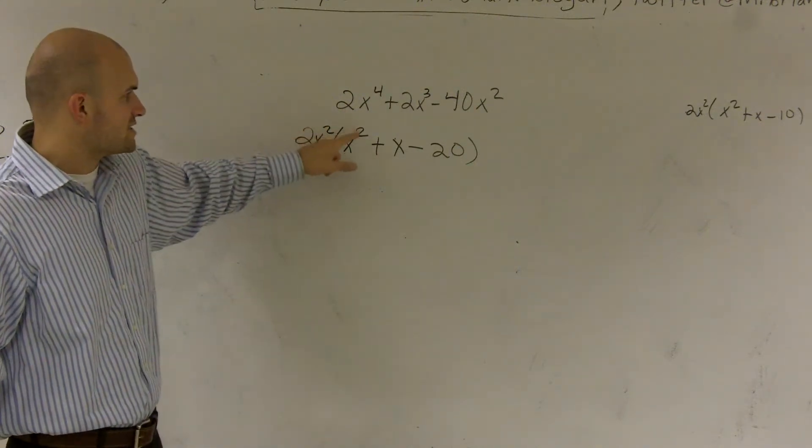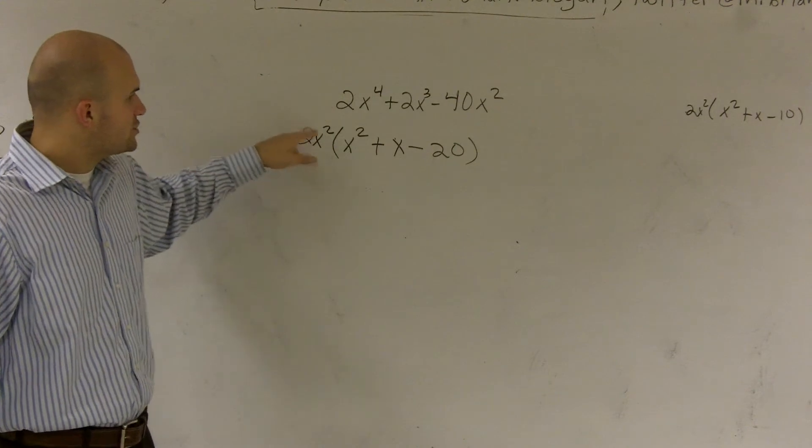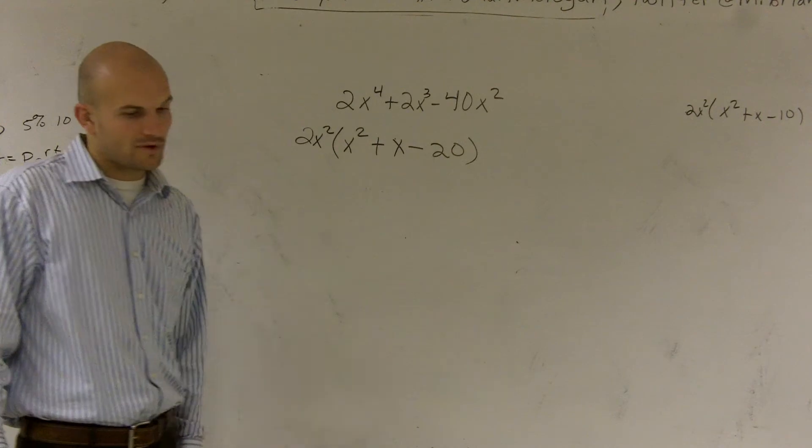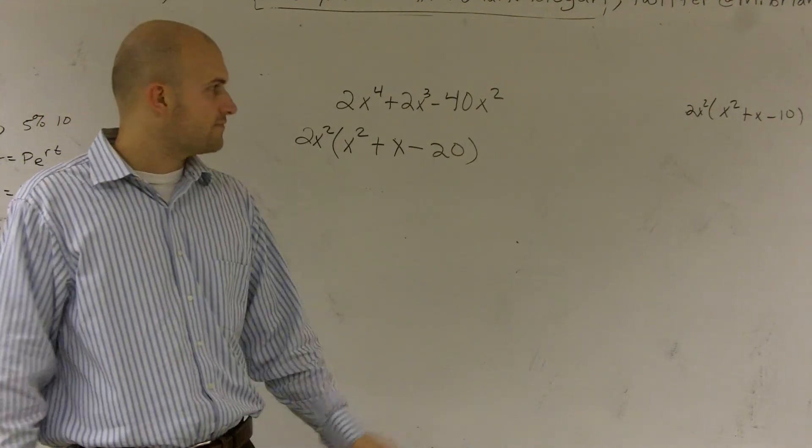2x squared times x squared is 2x to the fourth. 2x squared times x is 2x cubed. And 2x squared times negative 20 is negative 40x squared.